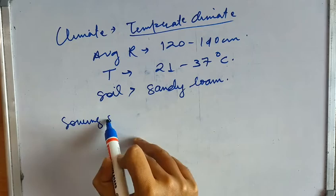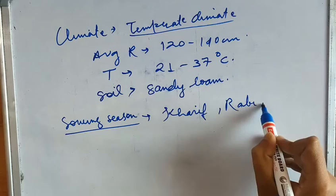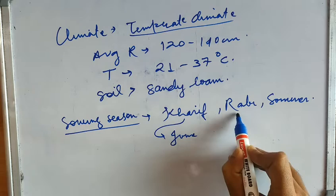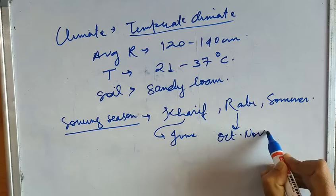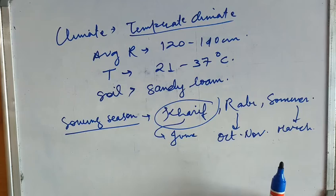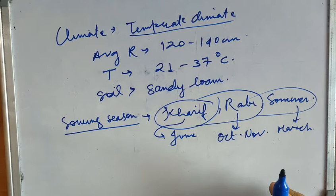Rice grows in all three seasons — Kharif, Rabi, and summer. In Kharif season, sowing time is around June; in Rabi season it is October to November; and in summer season it is March. In northern states like Jharkhand, Bihar, and West Bengal it is mainly a Kharif crop, but in southern states like Kerala and Tamil Nadu it is grown in both Kharif and Rabi seasons, and also in summer in some states.